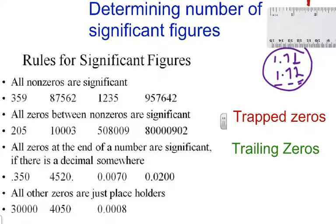But we would have three significant digits for this measurement. Now, you can be asked how to recognize significant digits in a number, so here are some rules we have to go over.